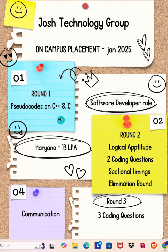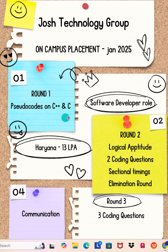We are going to see what Round 1, Round 2, and Round 3 are. Round 1 is on pseudo codes in C++ and C. It is an elimination round and negative marks are considered — there are negative marks also.